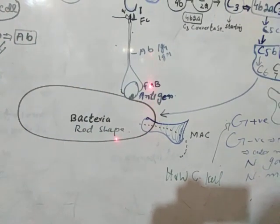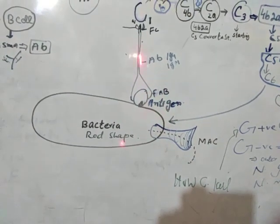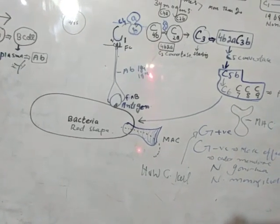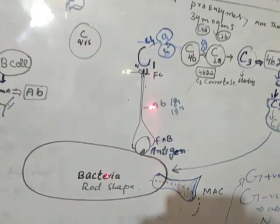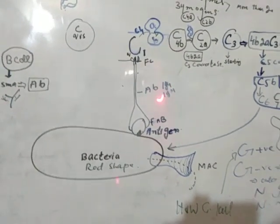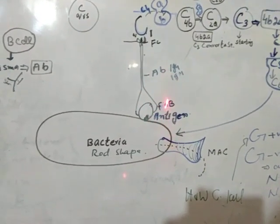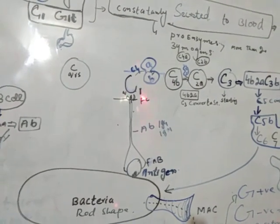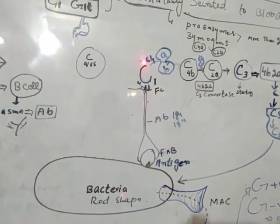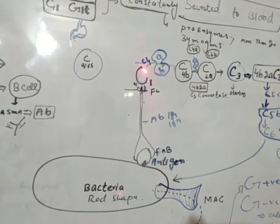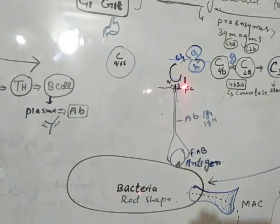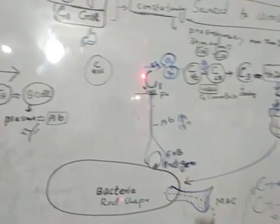The bacteria enters the bloodstream and antibodies are produced against it. The antibody attaches to the bacteria. To activate the classical pathway, IgM or IgG antibody must be associated with the bacteria. When IgM or IgG antibody attaches, the Fc region undergoes a conformational change, and this activated Fc region activates complement protein C1. C1 has Q, R, S portions, and it is the Q portion of C1 that is activated by the Fc region.